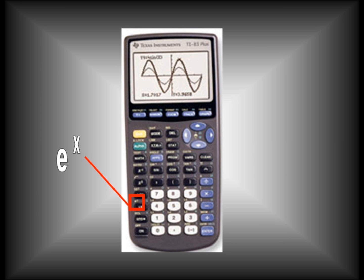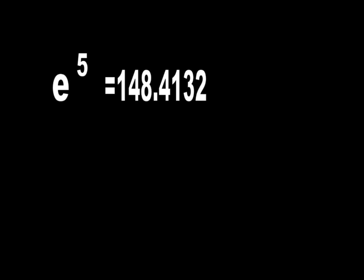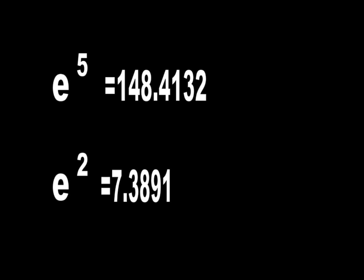Next we're gonna learn how to find the value using the e to the x key. Look for this button on your calculator. It is really easy, no doubt. Also round to four decimal places. E to the fifth is this, and e to the second is this. It is pretty simple, you can see.